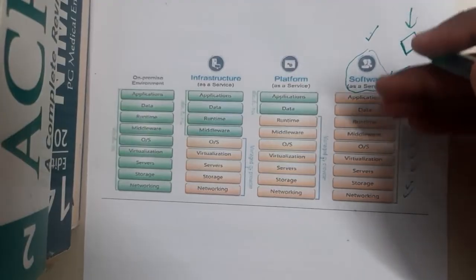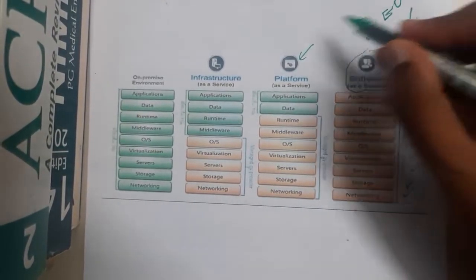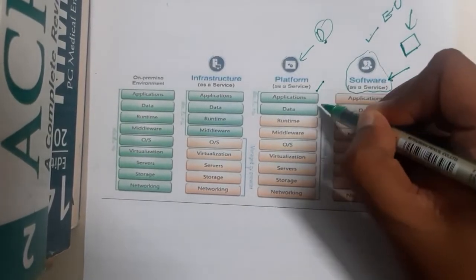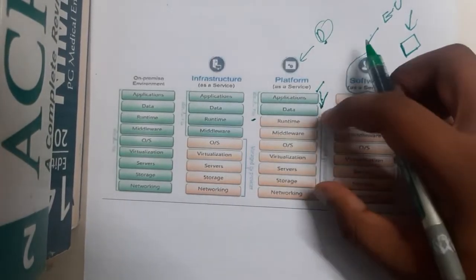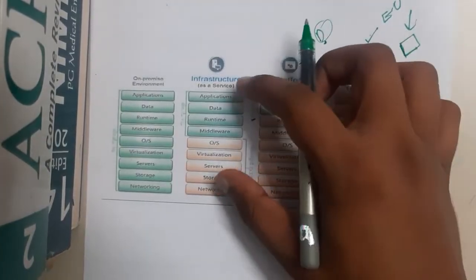In platform as a service, you get some control. It's used by developers, while SaaS is used by end users. Developers can install the application and do data storage and similar things. These two layers are allowed by you, and the rest will be managed by your provider. That is platform as a service.